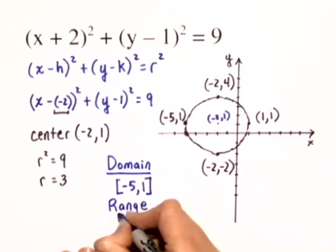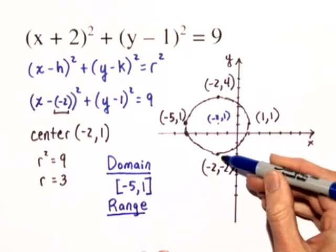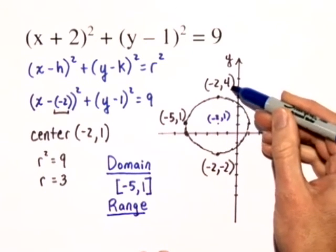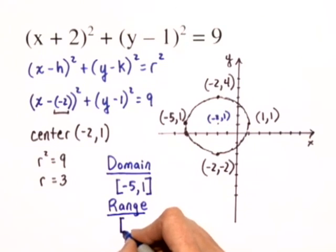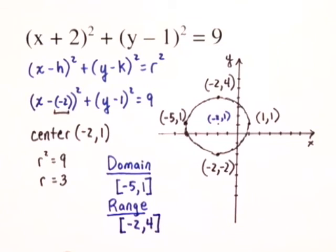The range are the y values, and we can see the lowest y value occurs at a y value of negative 2, and it goes up to a high y value of positive 4. And that's again on a closed interval from negative 2 to positive 4.